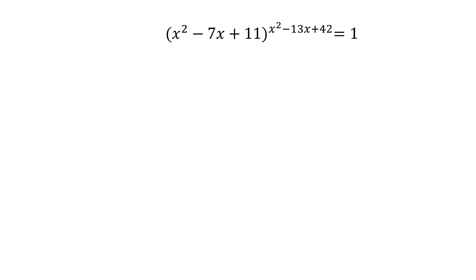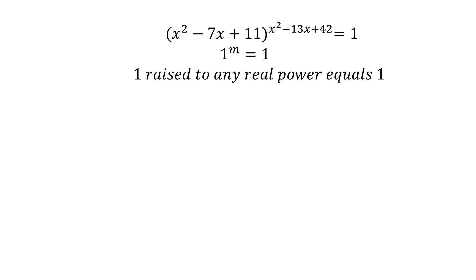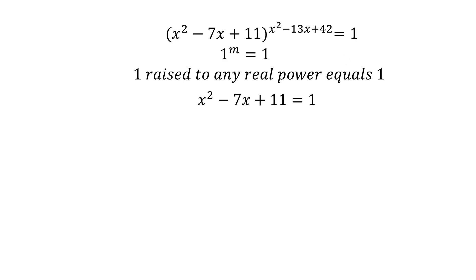We have our equation x squared minus 7x plus 11 raised to the power x squared minus 13x plus 42 equals 1. I'm going to apply this principle that 1 raised to any power — any real number — equals 1. So 1 to the power m equals 1.